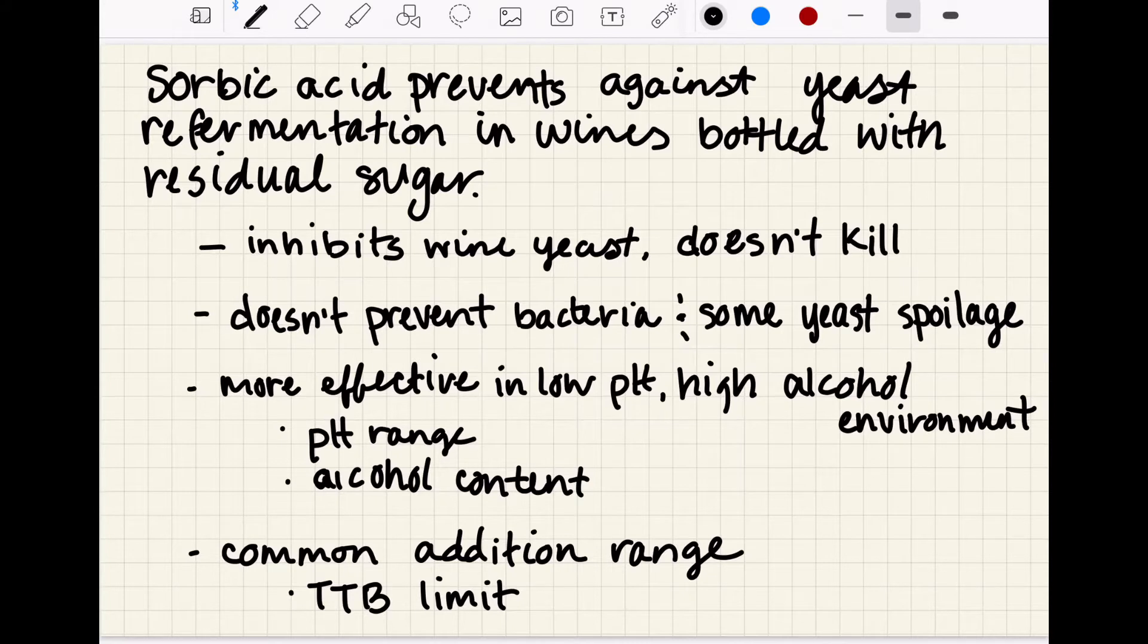So sorbic acid inhibits wine yeast but it doesn't kill them, so it just helps prevent refermentation and it does not prevent bacteria or some yeast spoilage. That's why it's really important to keep up our values of sulfur dioxide based on pH at the time of bottling to make sure that we're protecting against bacteria spoilage as well.